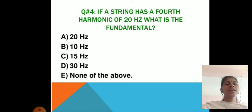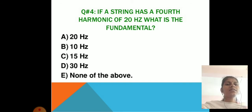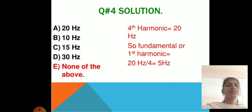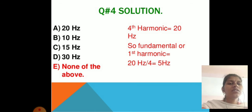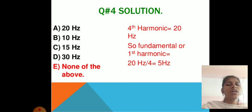Problem 4: If a string has a fourth harmonic of 20 Hz, what is the fundamental frequency? Since the fourth harmonic is 20 Hz, the fundamental (first harmonic) is 20/4 = 5 Hz. Answer: 5 Hz (none of the above options listed).